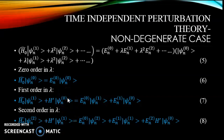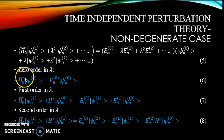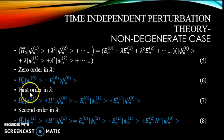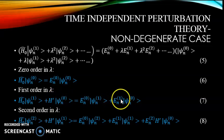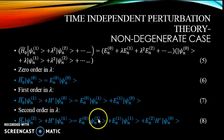An important observation is that when comparing each order in lambda, the sum of exponents of every term equals the order of that equation. For the zeroth order: 0+0=0. For the first order: the exponents sum to 1 in each term. For the second order: the exponents of each term sum to 2.